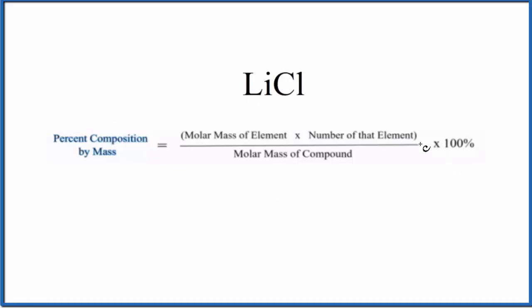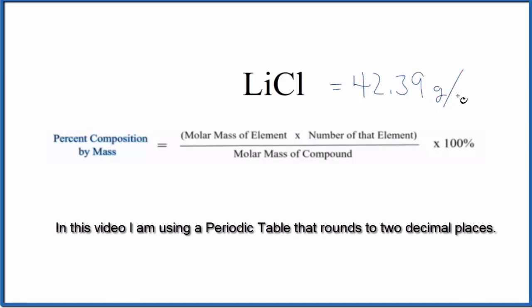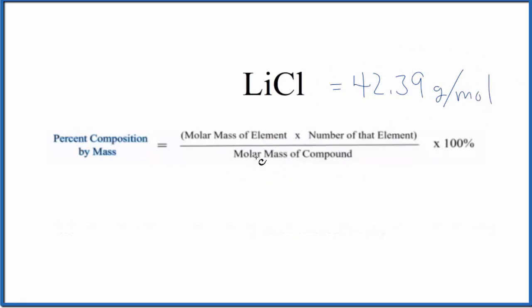So we have this formula here that will help us do that. The first thing we need to know is the molar mass of the entire compound. For lithium chloride, if we add the atomic mass up for lithium and for chlorine, we're going to end up with a molar mass of 42.39 grams per mole. So with that information, we have the molar mass of the entire compound.